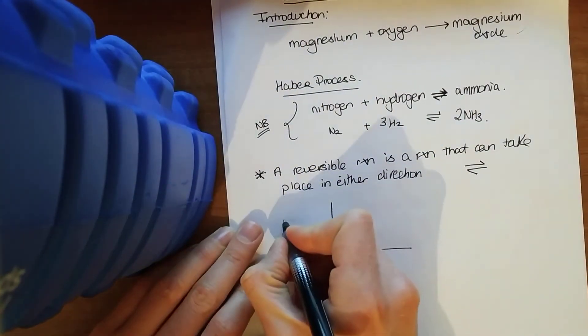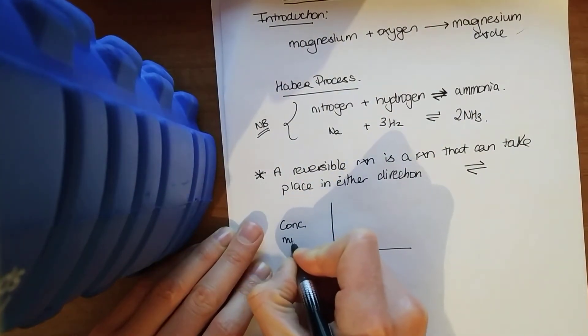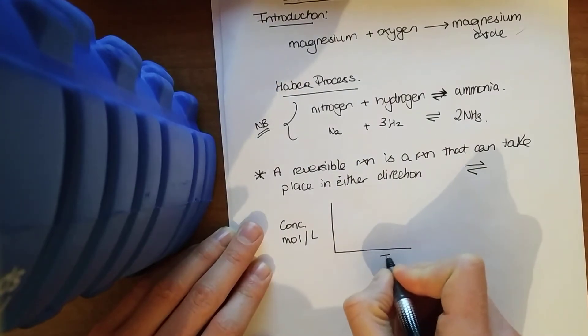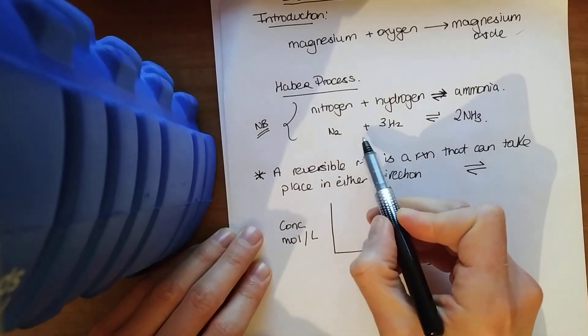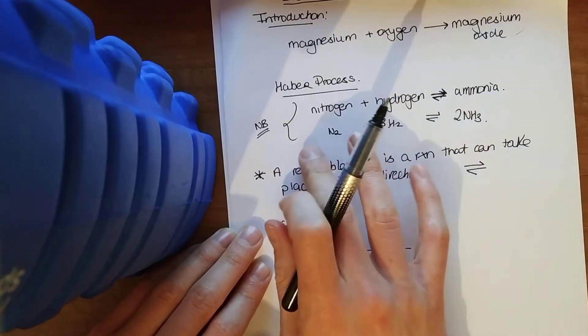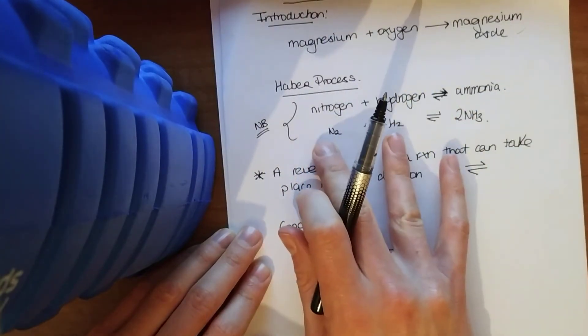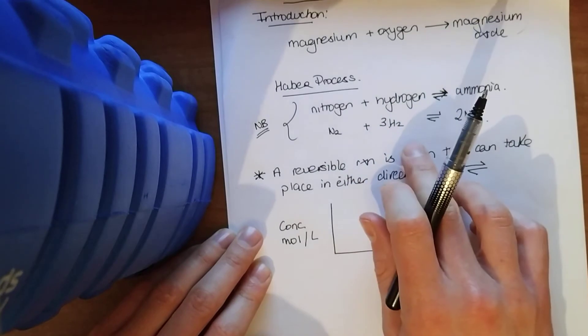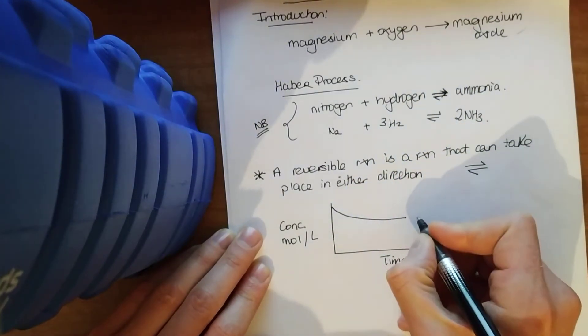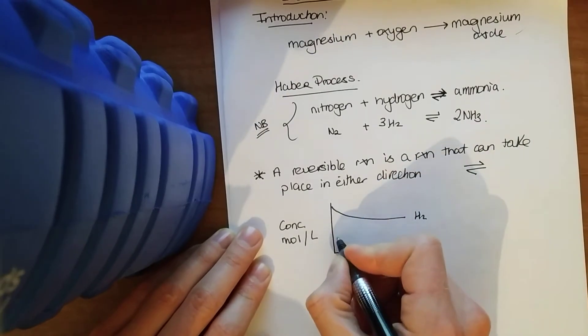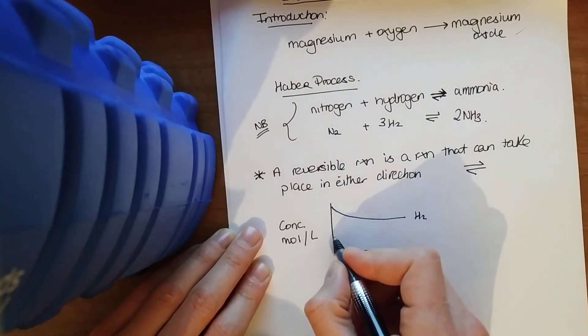So if I was drawing a graph of that - say we had our concentration there, moles per liter, and we had time down here in seconds. And I had my reactants. What's going to happen to the concentration of the reactants over time? They're going to decrease because we're forming products. Say there's my hydrogen. And I'll just draw the nitrogen a third, roughly a third as high, because one to three is my ratio.